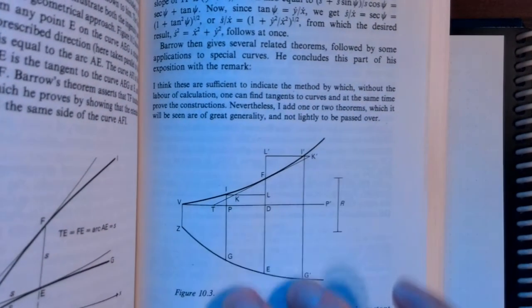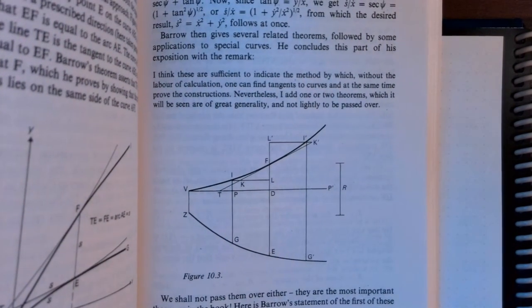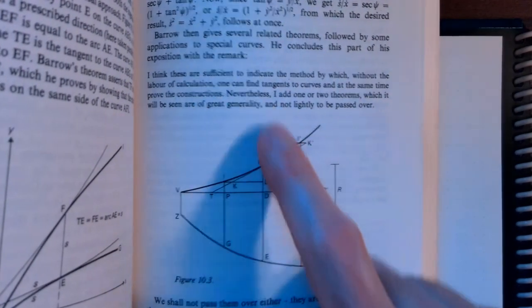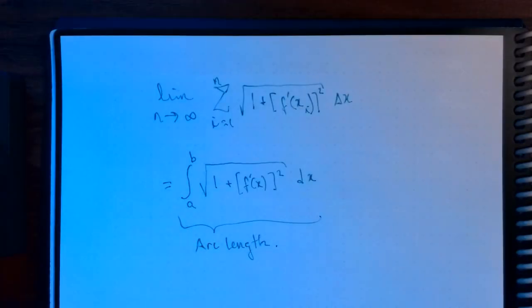it looks like a really complicated way to find tangent lines, but it turns out these are the fundamental steps that we would be doing in finding arc length. And that was one of Isaac Barrow's contributions in addition to his work on the fundamental theorem of calculus.